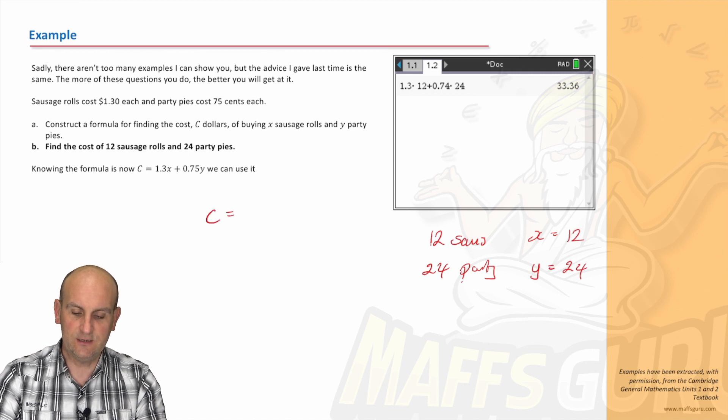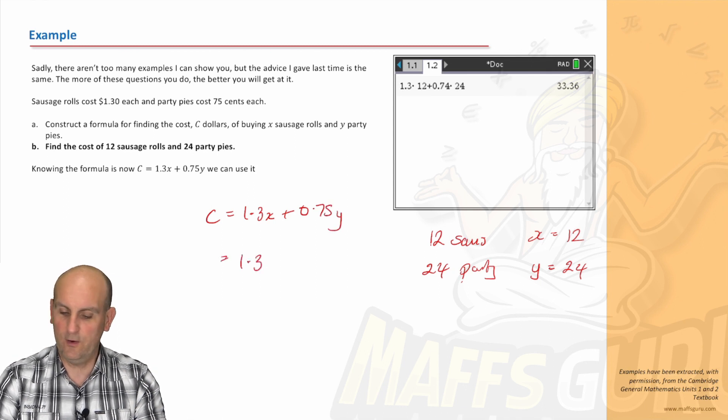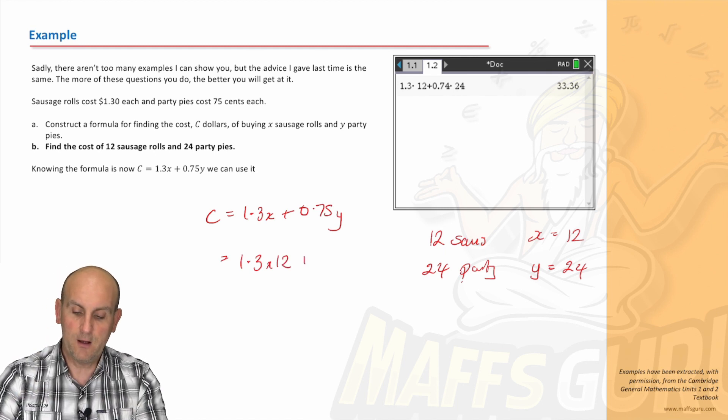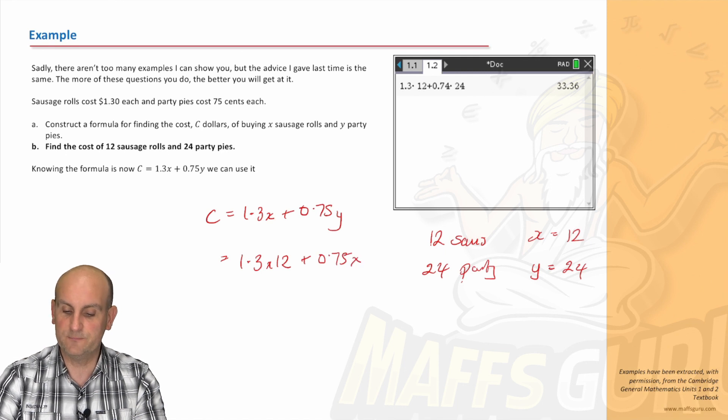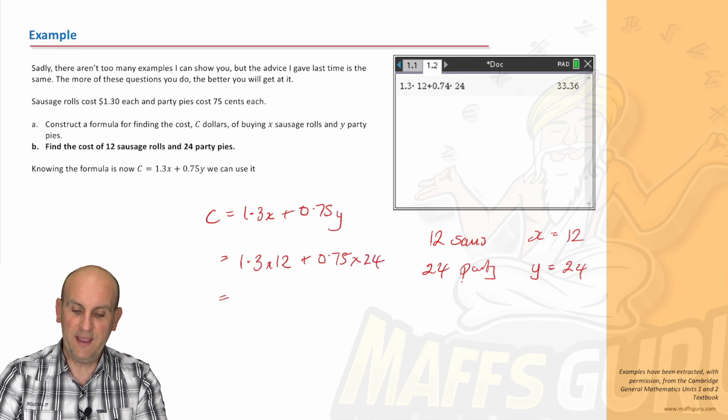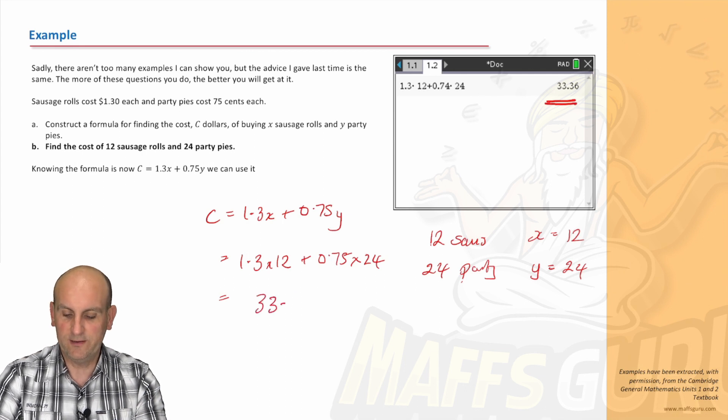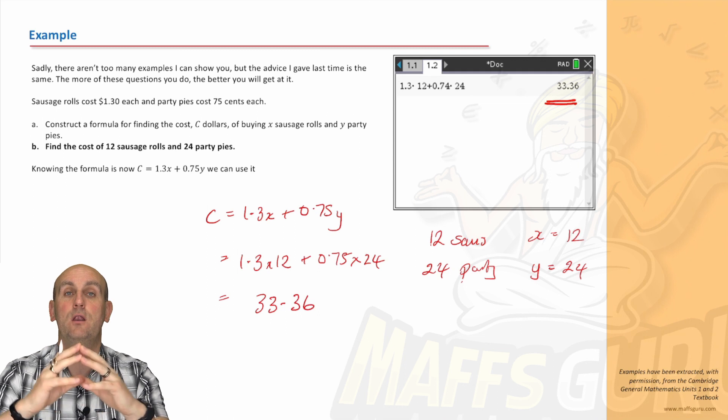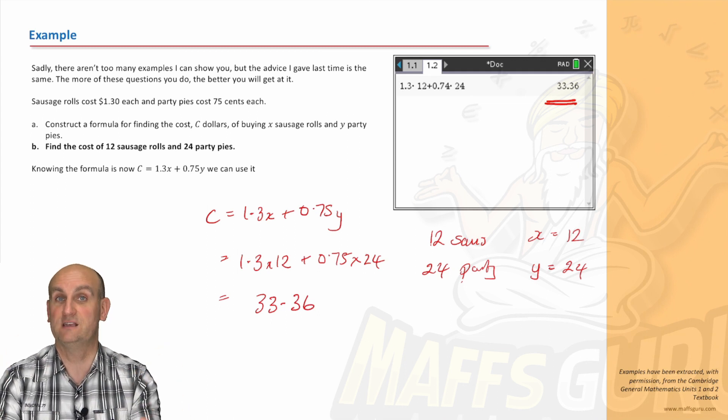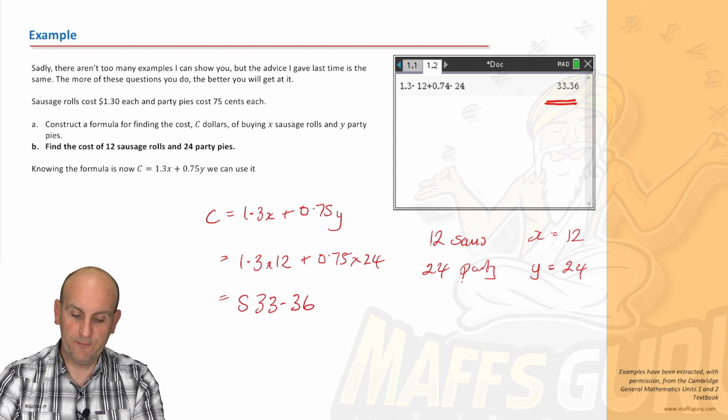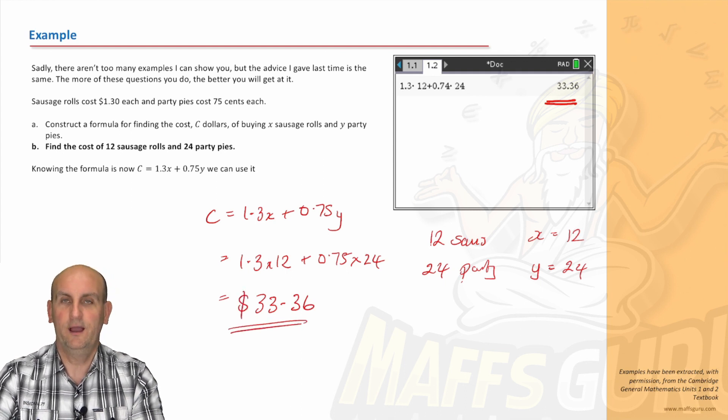So I had C was equal to 1.3X plus 0.75Y. I now know X is 12. So I'm going to 1.3 times 12, remember? Between the 1.3 and the X's are times. Plus 0.75 times 24. And banging that into my calculator gives me this fabulous value there of 33.36. Now, obviously, if there was longer numbers of decimal places there, I'd round to two decimal places. Is that my right answer? No, because that is in terms of dollars. And because it wants to know the cost, I'm going to put my dollar sign in.